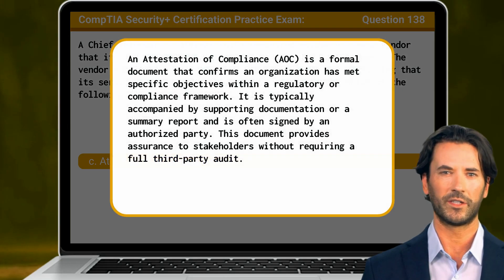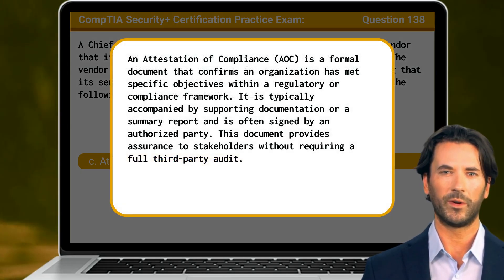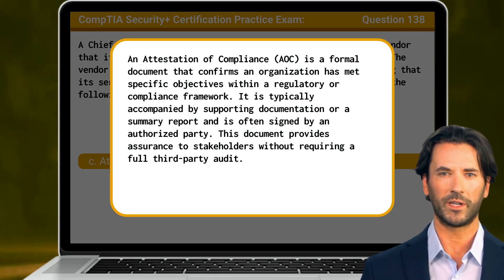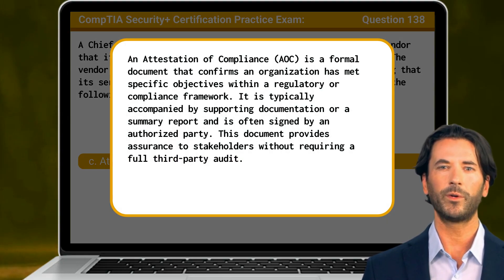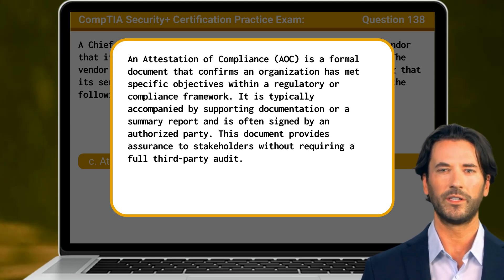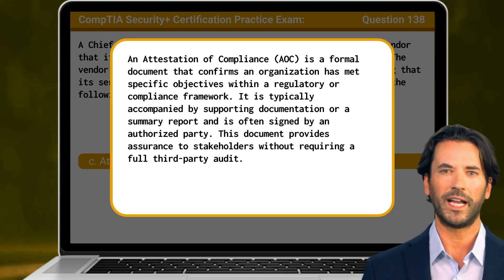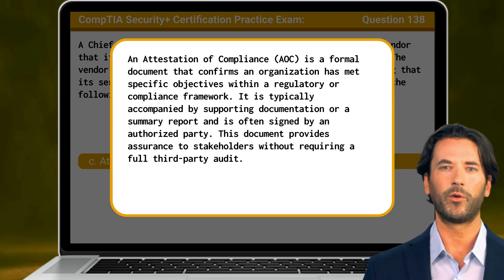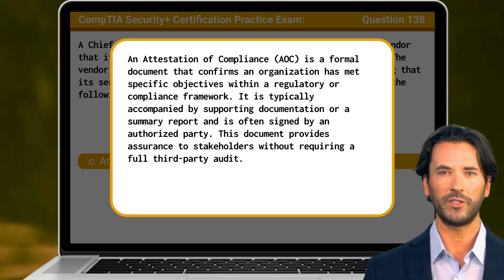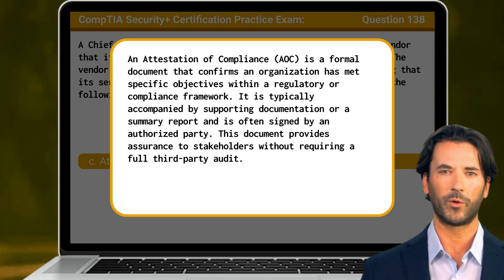An attestation of compliance is a formal document that confirms an organization has met specific objectives within a regulatory or compliance framework. It is typically accompanied by supporting documentation or a summary report and is often signed by an authorized party. This document provides assurance to stakeholders without requiring a full third-party audit.